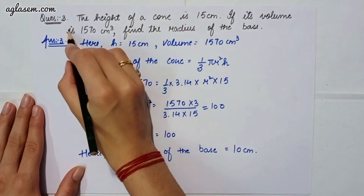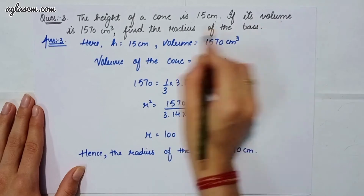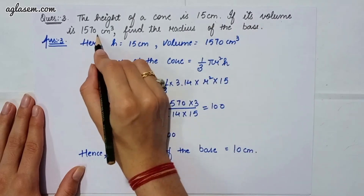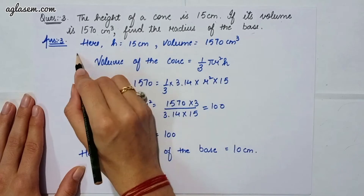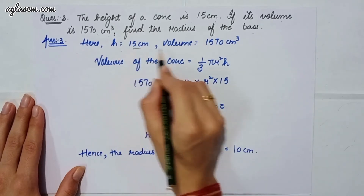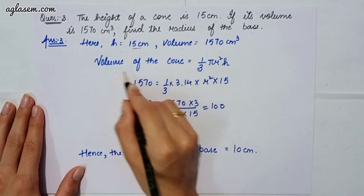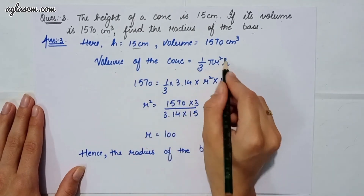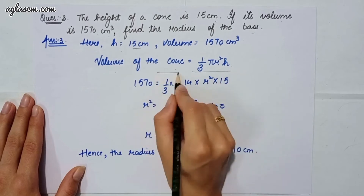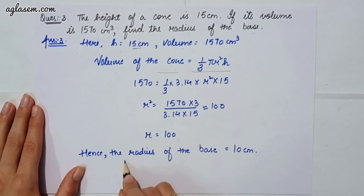Moving to our third question, which says: the height of a cone is 15 cm. If its volume is 1570 cm³, find the radius of the base. Height is 15 cm and volume is 1570 cm³. We apply volume of cone = 1/3 × π × r² × h. By placing the values we get r² = 100, so the radius of the base is 10 cm.